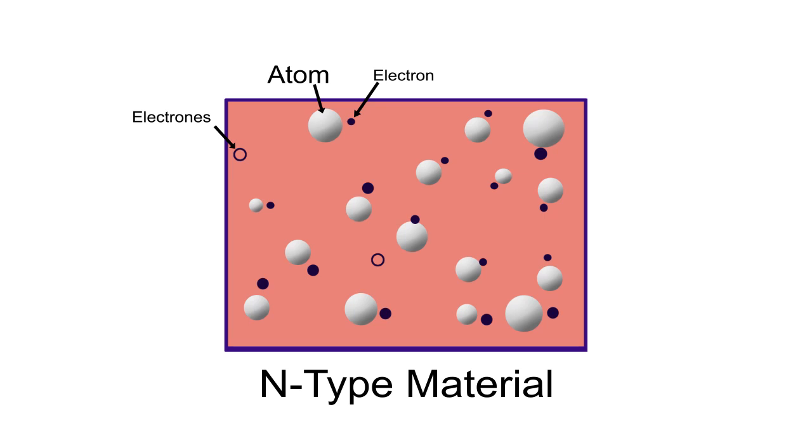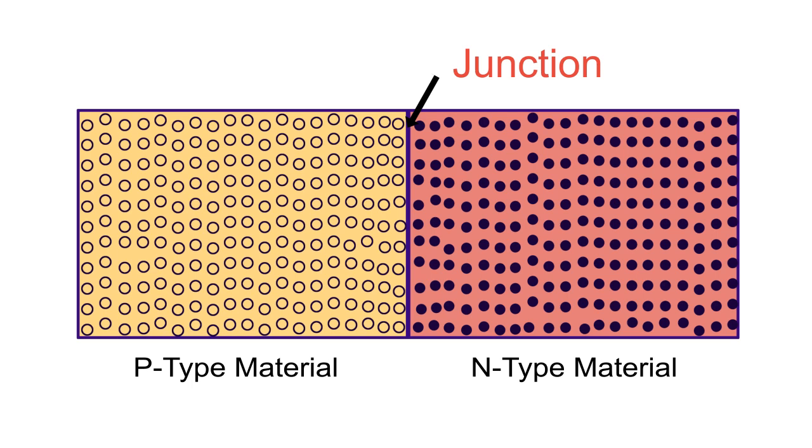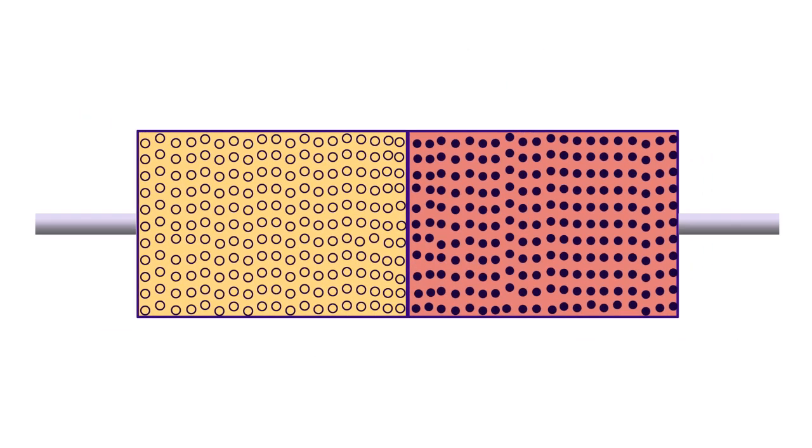Therefore, in N-type material, electrons are majority charge carriers. When a P-type semiconductor and an N-type semiconductor are joined together with the help of a special fabrication technique, a P-N junction is formed. Metallic terminals are connected with these substrates.